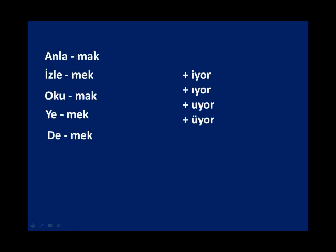Now how about the other group — those whose roots end in a vowel: anlamak, izlemek, okumak, yemek, demek? We again omit the infinitive and get the root: anla, izle, oku. Now what you should do is a little different here — there's one more trick. These roots end in vowels, and the suffix we're going to add — '-iyor'/'-uyor' — also starts with a vowel. So if you add them directly, there's going to be a vowel clash, and we don't want that. So what we do is erase the final vowel of these roots.